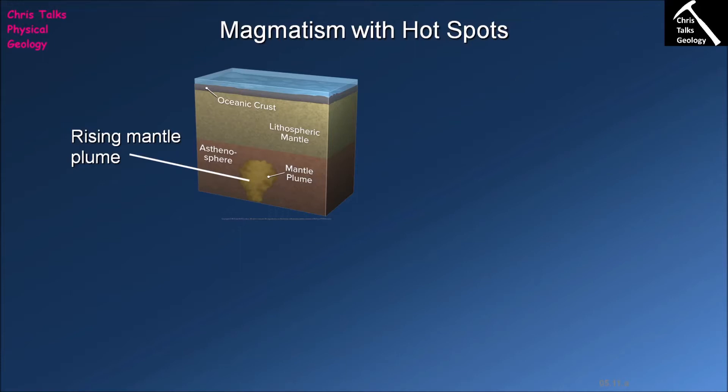The final environment we're going to look at for the generation of magma is the hotspot environment. A hotspot is an area of the Earth's surface which is suffering intense magmatic activity that cannot easily be explained by its plate tectonic setting. The classic example would be Hawaii, which is a chain of volcanically active islands located miles away from any kind of plate boundary whatsoever.